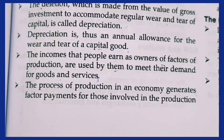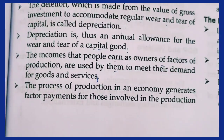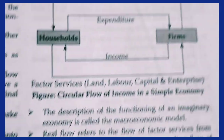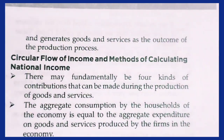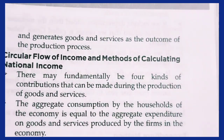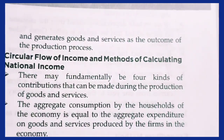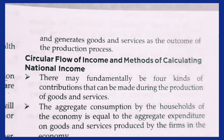The process of production in an economy generates factor payments for those involved in production and generates goods and services as the outcome. In the production process, goods and resources are used, and the final outcome is the complete result of the production process.